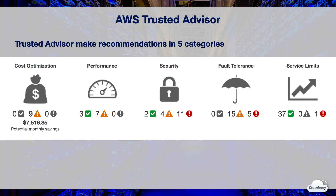On this graph, Trusted Advisor is telling us that nine optimization options can potentially save over seven thousand dollars per month. Performance recommendations can help you improve the speed and responsiveness of your applications.